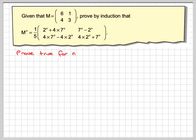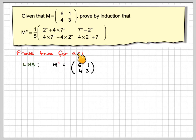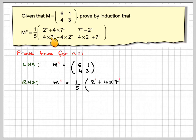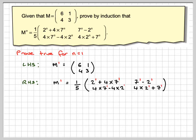We're going to prove using the same steps before the induction. So prove true for n equals 1. We'll take the left-hand side: M to the 1 would be [[6,1],[4,3]]. And on the right-hand side, we work out M to the 1 by replacing n with 1 throughout.